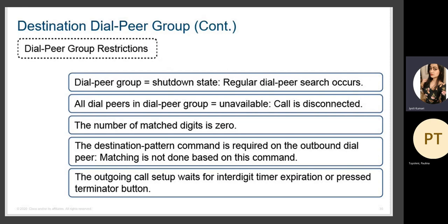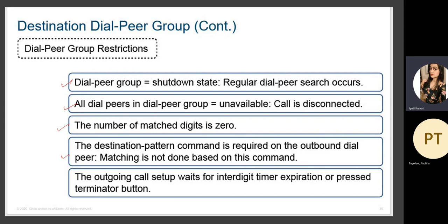Restriction or group restriction for destination dial peer groups can also be configured. When a dial peer group is in shutdown state, regular dial peer search occurs. All dial peers in the group being unavailable results in the call being disconnected with zero matches. The destination pattern command is required on outbound dial peers — if matching is not done, the call connects. The outgoing call also waits for interdigit timer expiration or a pressed terminator button.